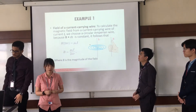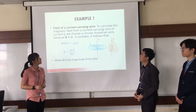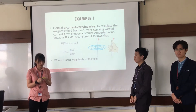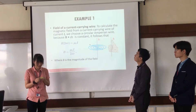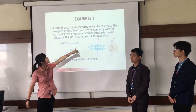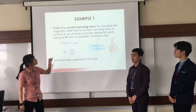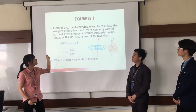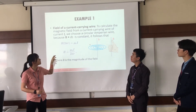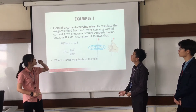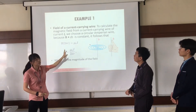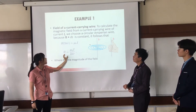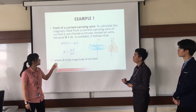In Example 1, we look at the field of a current-carrying wire. We calculate the magnetic field of a current-carrying wire of current I. We choose the circular Ampere's path, and because the dot product of the magnetic field and the direction of the path is constant, we substitute ds with the circumference of the circle, 2πr. Moving 2πr down gives us the formula for the magnetic field.